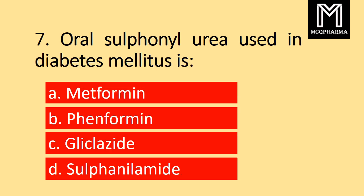Question number 7. Oral sulfonylurea used in diabetes mellitus is: Option A Metafoamine, B Panafoamine, C Glyclazide, D Sulfonamide. Correct answer: Option C Glyclazide.